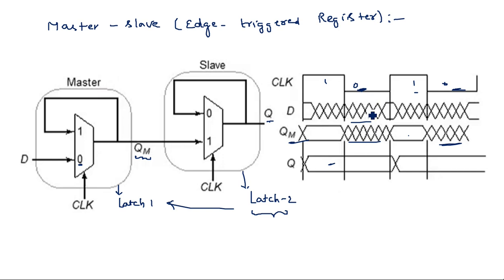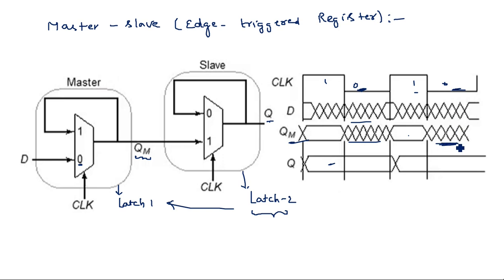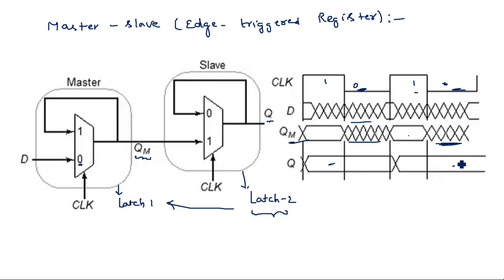When clock equals zero, the slave does not respond — it holds Q unchanged. When clock goes to one again, QM is transferred to Q. This cascade of two latches forms the master-slave configuration, making it an edge-triggered flip-flop rather than a level-triggered latch.